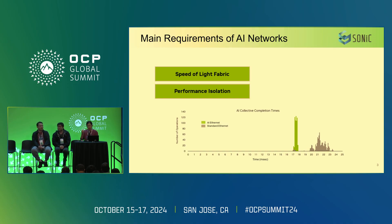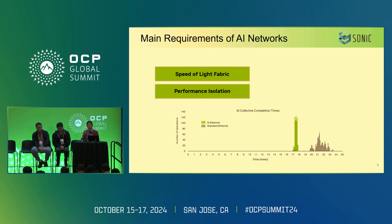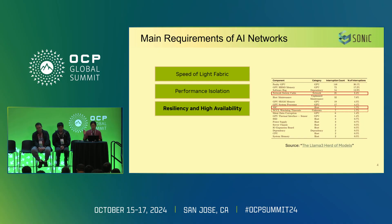So the first wish list item is to enable all AI traffic to have better load balancing — how to find a better path. Very closely related to this, when we have other traffic co-existing in one network, we'd love to have better isolation to enable better bandwidth utilization.